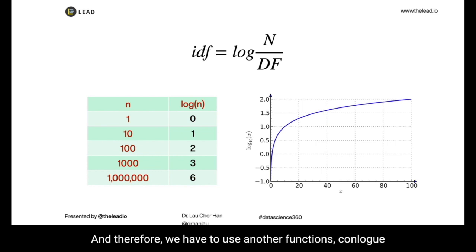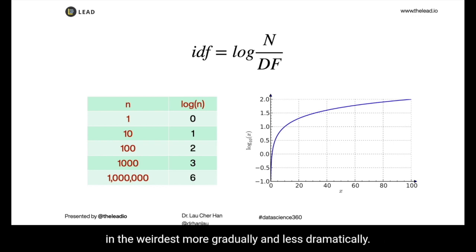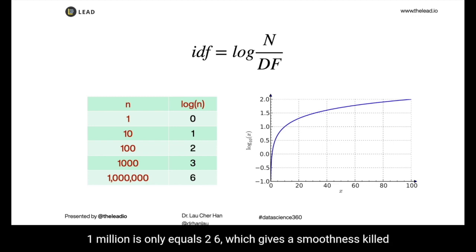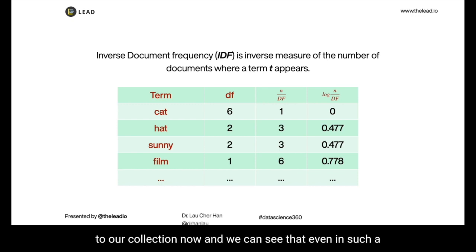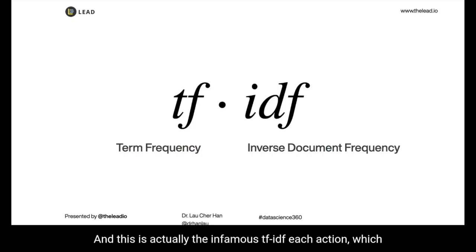Therefore, we use a function called log to calculate our IDF. In mathematics, the logarithm is the inverse function of the exponential, providing a convenient way to express large numbers. Applying it to the IDF helps present how IDF increases more gradually and less dramatically. If you look at the table and chart, the log of one million is only equal to six, which gives a smoother scale as our data collection size increases. Applying log IDF to our collection, even in this small example, makes the importance scores of keywords much more realistic. This is the famous TF-IDF feature extraction, which is the basis of almost all natural language processing and text analytics work.